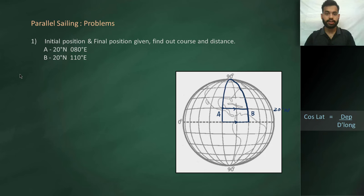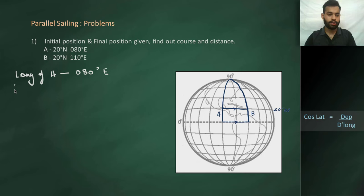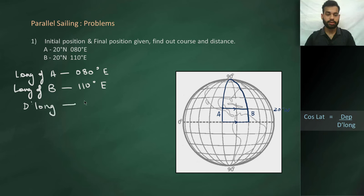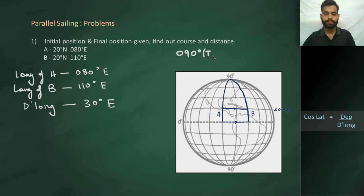With the information provided, let us first find the D-long between A and B. Longitude of A is 80° East and longitude of B is 110° East. Therefore D-long between A and B is 30°, and the direction of travel is east. So the course we already know is easterly — 090° True.